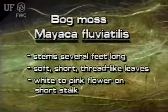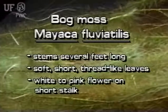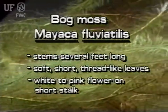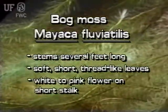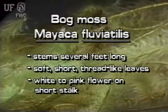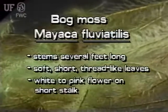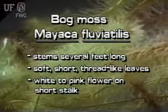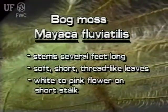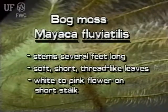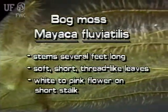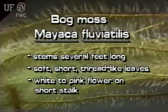Remember, submersed bogmoss stems are usually several feet long. Its leaves are soft, short, and thread-like, with no divisions. Its flowers are white to pink and grow on short stalks.